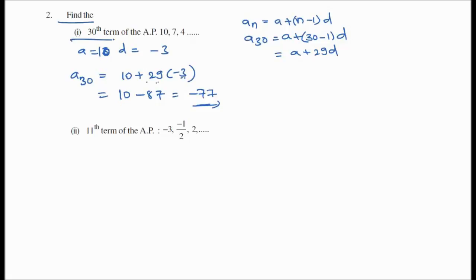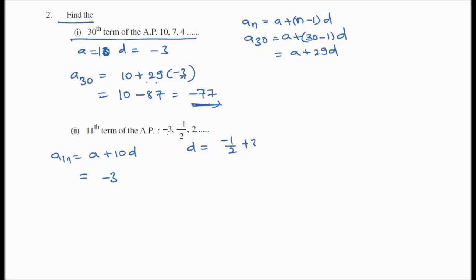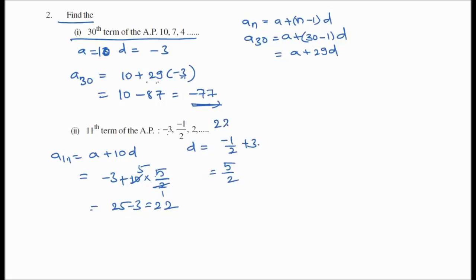The 30th term of the AP is -77. Now for the 11th term: a11 = a + 10d. Here a = -3 and d = 5/2. So a11 = -3 + 10×(5/2) = -3 + 25 = 22. The 11th term of the AP is 22.